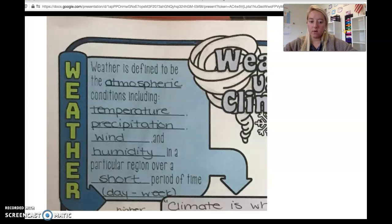Today we're going to compare and contrast weather versus climate. They're often words that in a non-scientific setting we use interchangeably, but I'm here to tell you that they're very different. So we need to kind of clear up that misconception that you might have. We define weather to be the atmospheric condition including temperature, precipitation, wind, and humidity in a particular region over a short period of time.